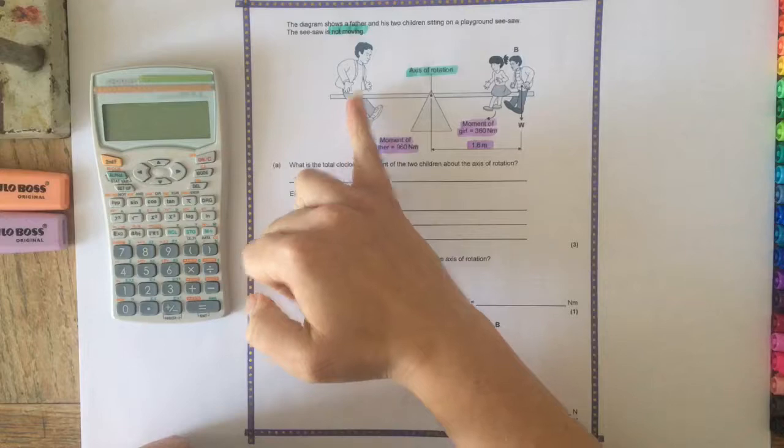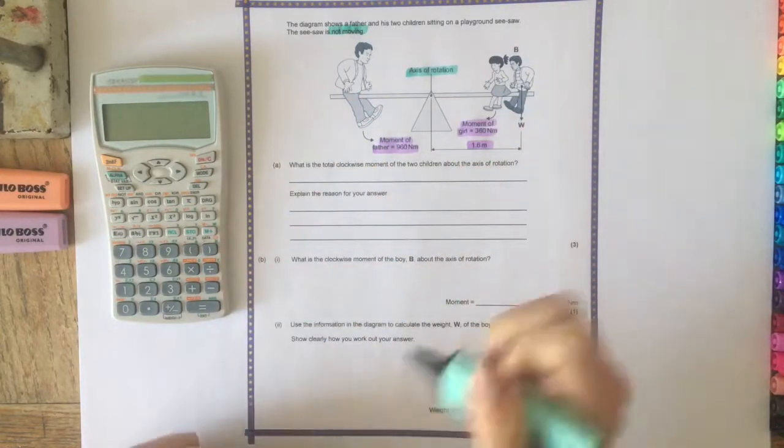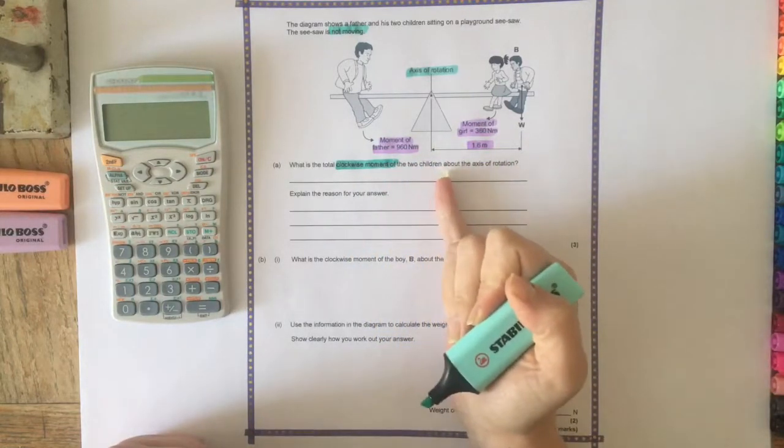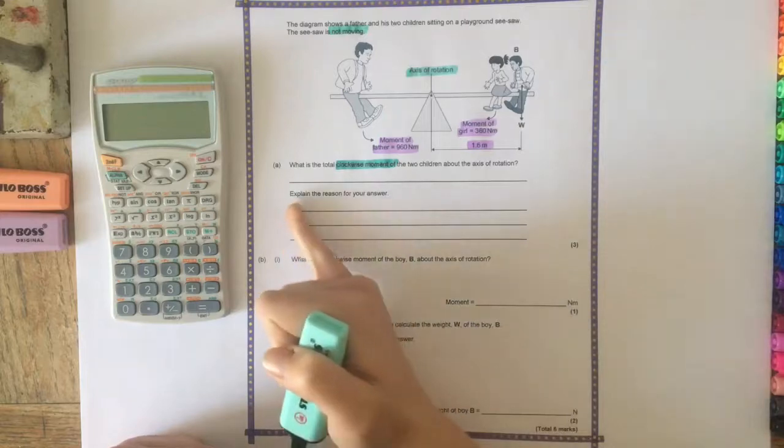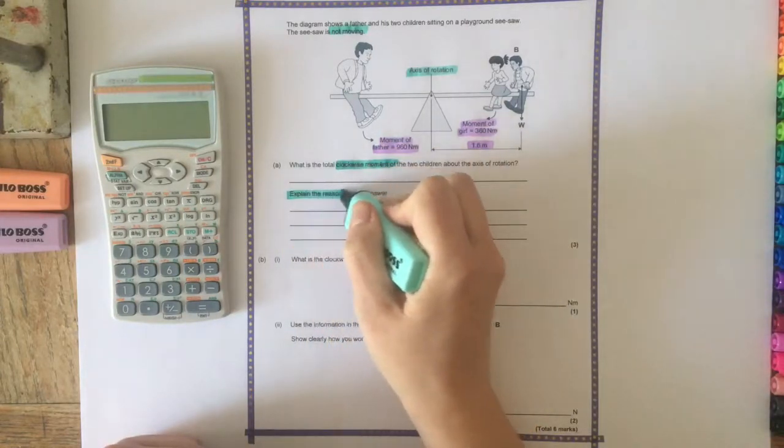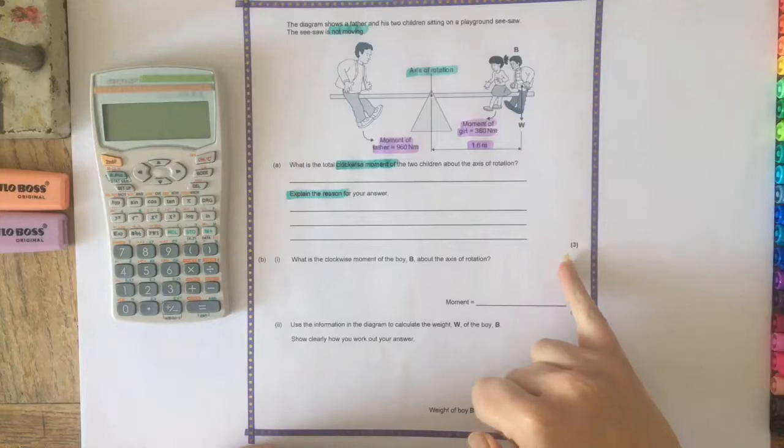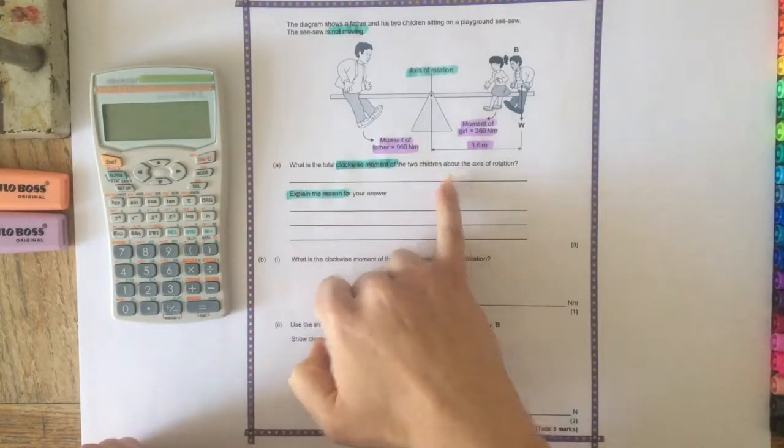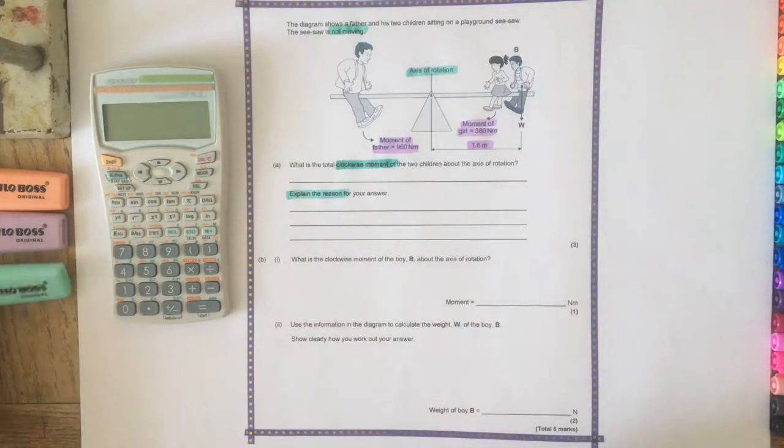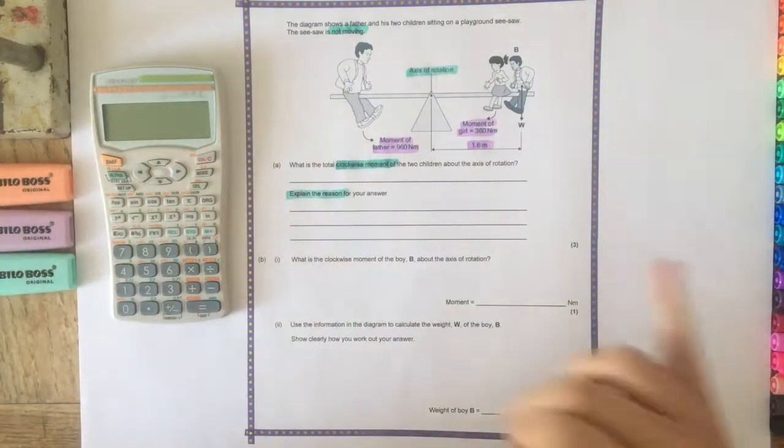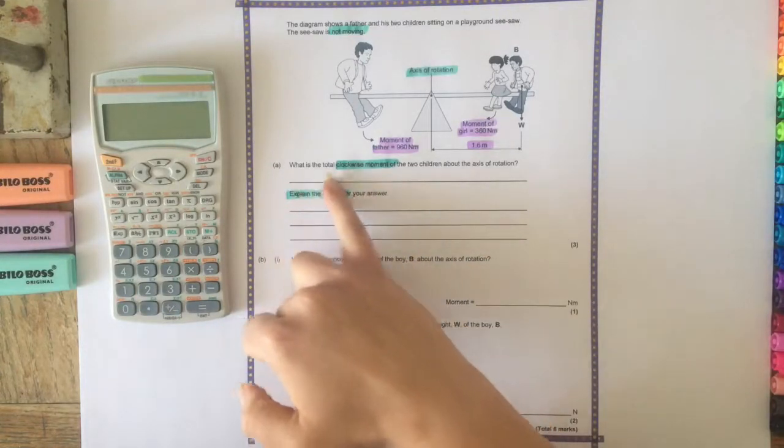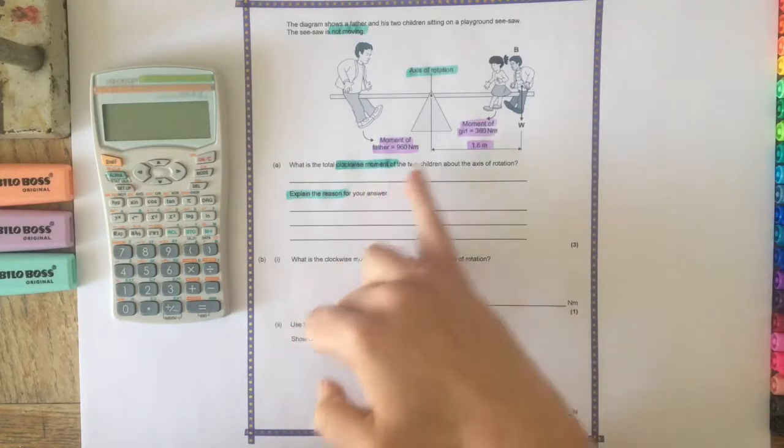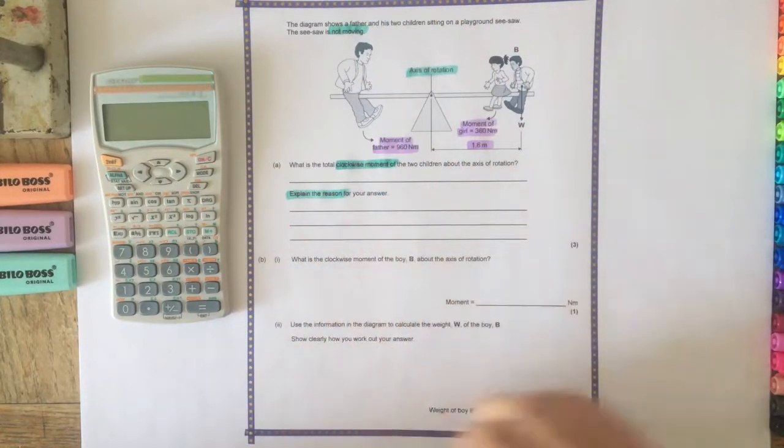So we've got all that information and the first question says what is the total clockwise moment of the two children about the axis of rotation, and then explain the reason for your answer. So it's three marks. I imagine that you'll get a mark for this first section here and then you'll get probably two marks for these bits here. Now really it's asking you to state what is the total clockwise moment. There's not really a calculation that you need to do for this, so we need to look at this information and then make a decision.